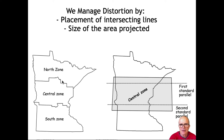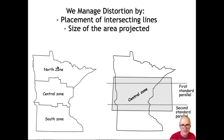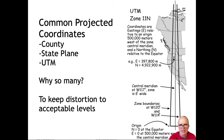We have standard projections that place first and second standard parallels and define the kind of projection so that within a zone we have a limited amount of error. For example, in the state plane system, there are three zones in Minnesota with defined first and second standard parallels for the conic projection, and everywhere in this zone the projection distortion is less than one part in 10,000. We need three zones because as you get to the edge, the distortion gets too large — you're too far from the line of intersection — so we create a second and third zone.